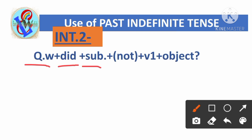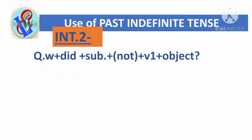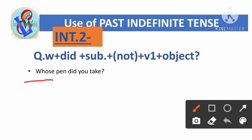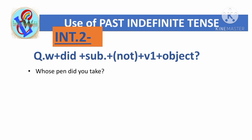First sentence: 'Whose pen did you take?' The question word 'whose' is written together with the noun it modifies. Then 'did' is used, 'you' is the subject, and 'take' is the first form of the verb.